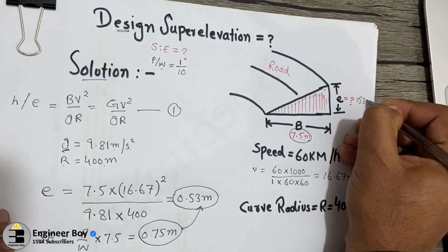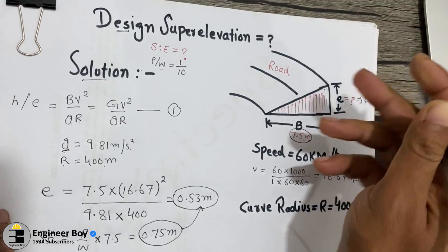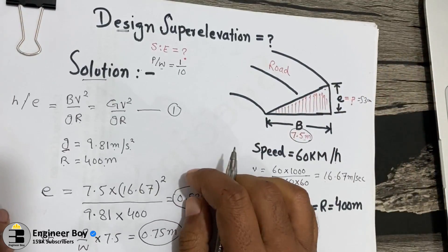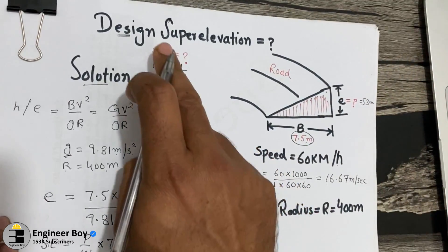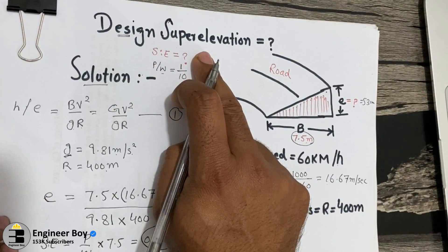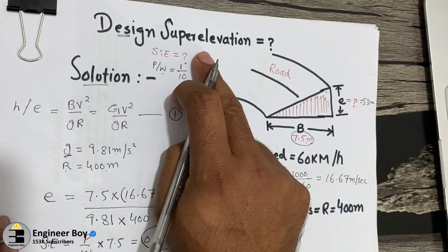Converting to centimeters by multiplying by 100, that's 53 centimeters. This means the outer edge of the road can be at an elevation of 53 centimeters from the inner edge. This is how we calculate the design super elevation.